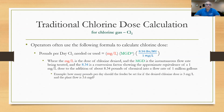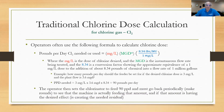Example: how many pounds per day should the feeder be set for if the desired chlorine dose is 3 milligrams per liter, the plant flow is 3.6 MGD, and you're using chlorine gas? Pounds per day needed equals 3 mg/L times 3.6 MGD times 8.34, which works out to 90 pounds per day. At that point, you would go to the chlorinator, set the feeder for 90 pounds per day, then go back periodically to make rounds, verify the machine is actually feeding that amount, and take chlorine residual to make sure no further adjustments are needed.